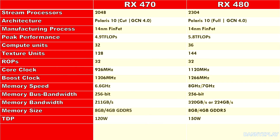Let's take a look at the specifications here. The RX 470 has 2048 stream processors while its bigger brother the RX 480 has 2304. They're both based on the Polaris 10 architecture, or GCN 4.0, but the 470 is a cut-down version while the 480 uses the full Polaris 10 chip. The manufacturing process is the 14nm FinFET process that both chips are on. The RX 470 has a peak performance of 4.9 teraflops while the RX 480 has 5.8 teraflops. The RX 470 has 32 compute units while the RX 480 has 36.